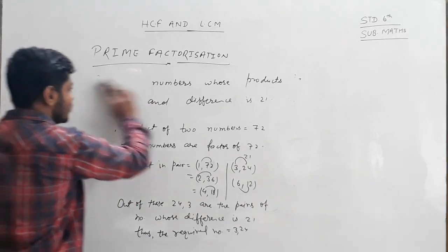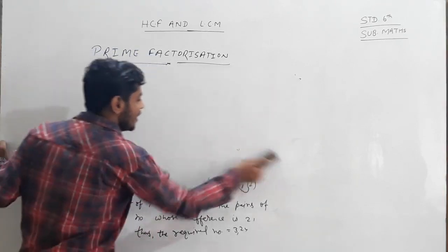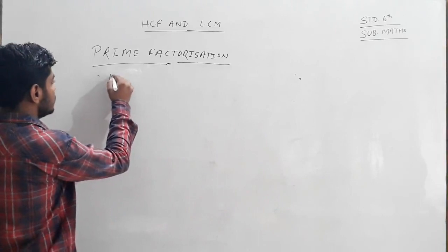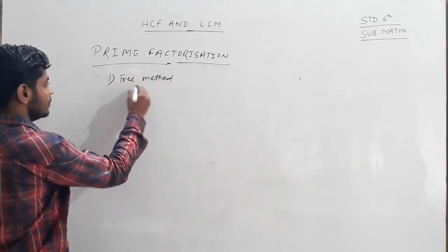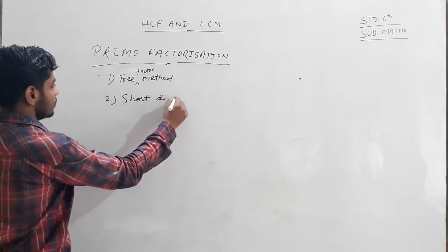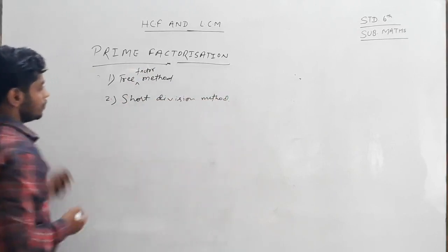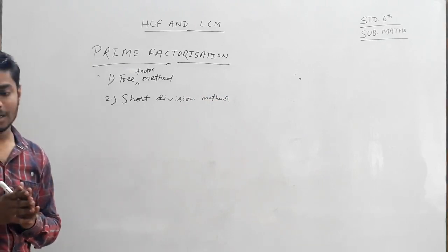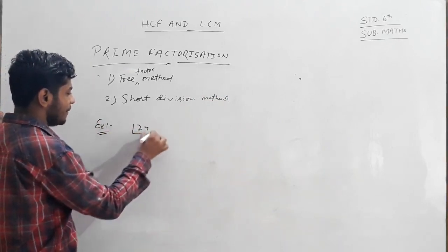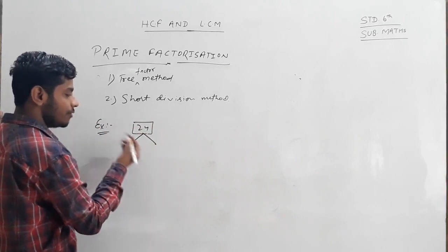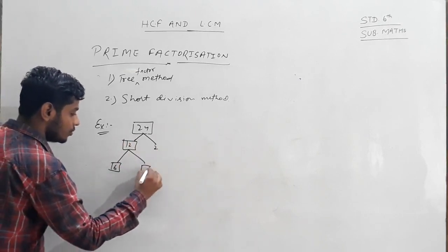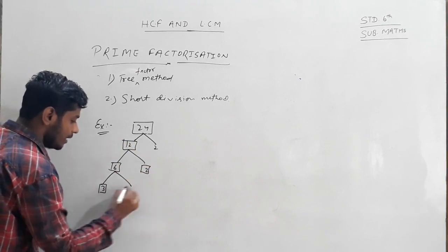Now, you should be aware of this process. We have to get the prime factors of any numbers. There are 3 factors. Any composite term, the prime factors is equal to 3 and 2.